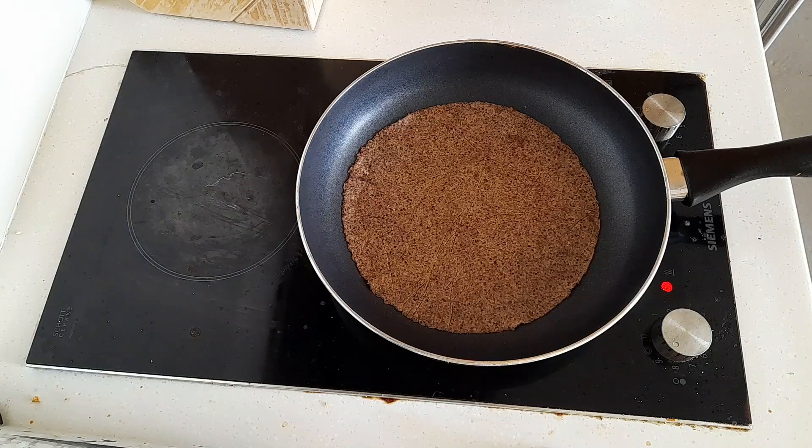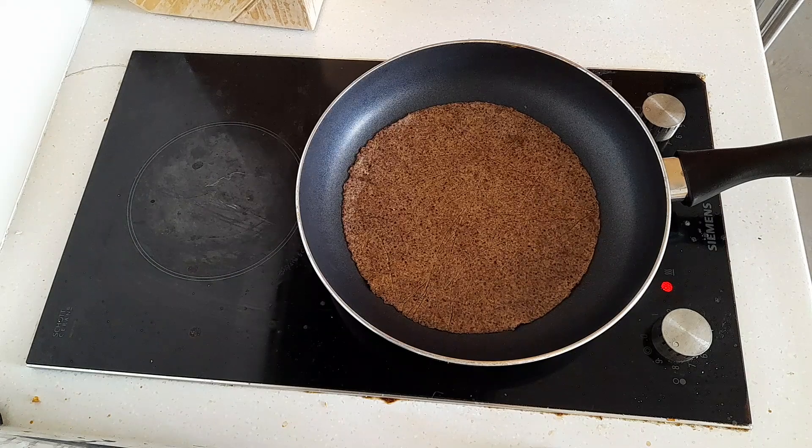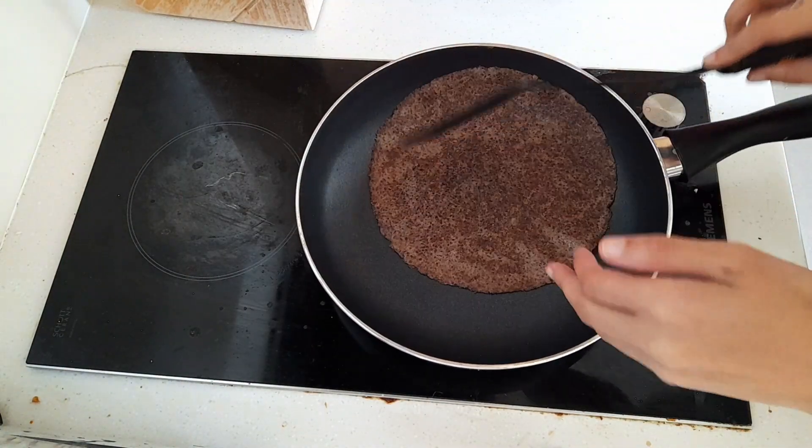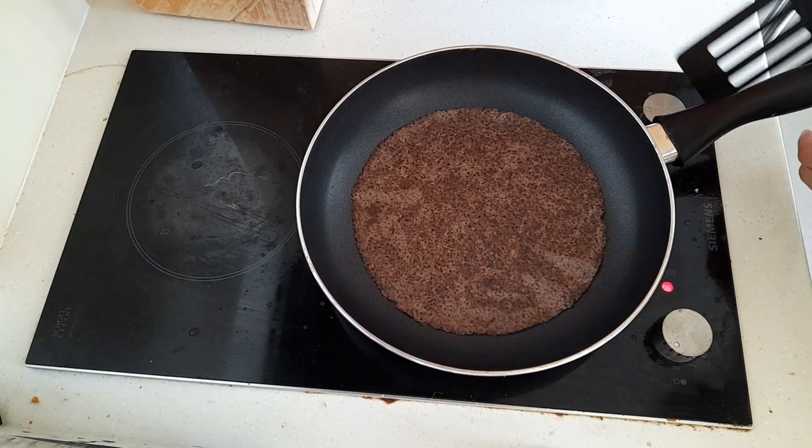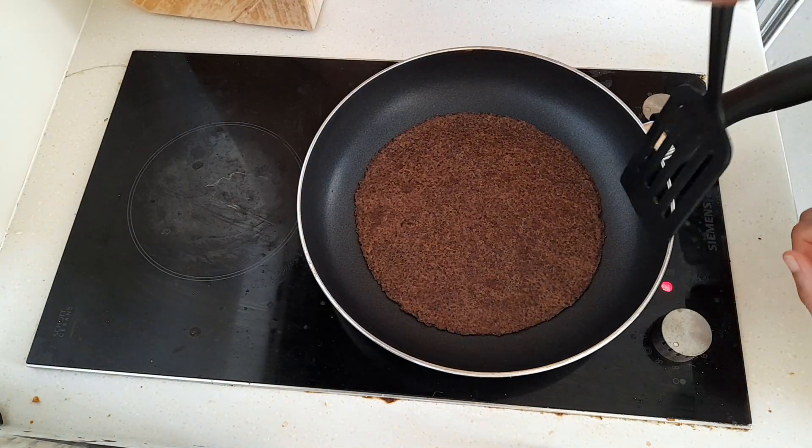Leave the flatbread on the pan for one minute to a minute and a half or until the bottom side is no longer sticky. Then use a spatula to flip it over. Cook on the other side for another 30 to 40 seconds then take the flatbread off the pan.